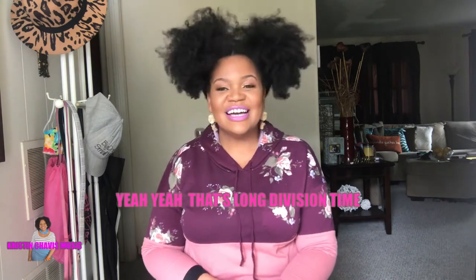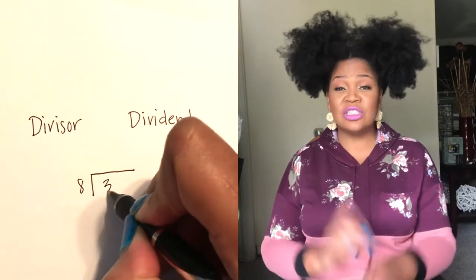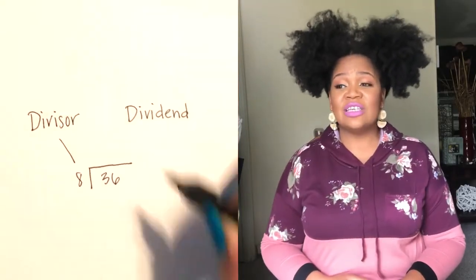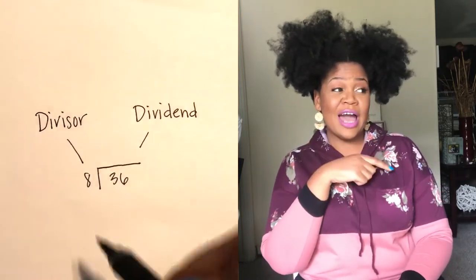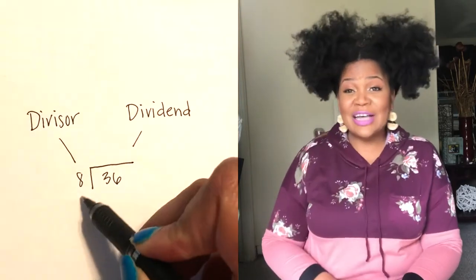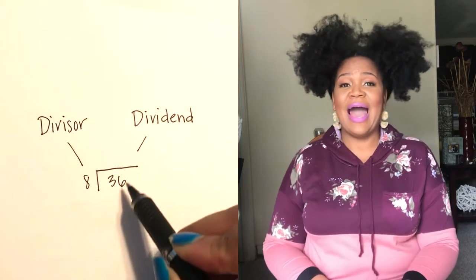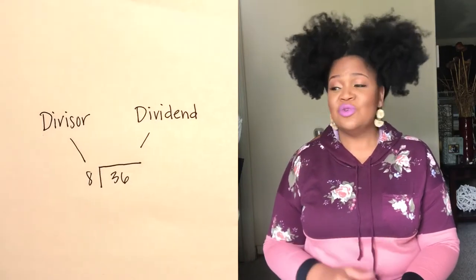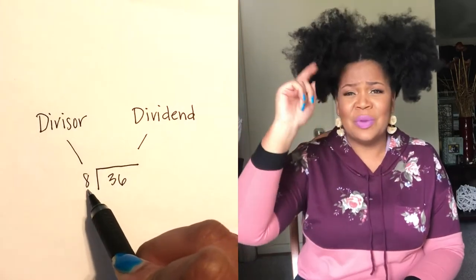First things first, gotta write the problem down. Divisor on the left, dividend on the right side. The divisor is the number you divide by, the dividend is the number you gotta divide.